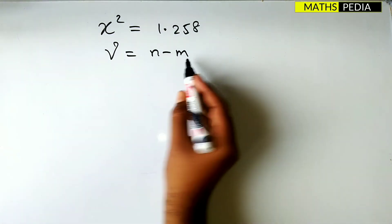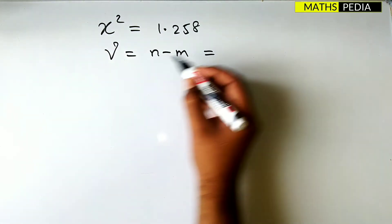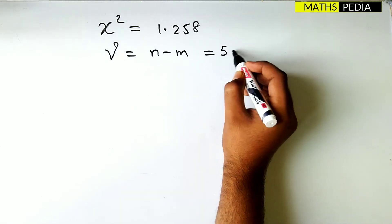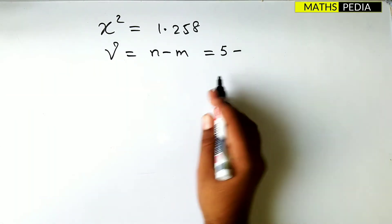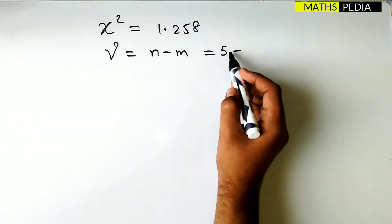And one more factor. So n minus m. What is n over here? It is nothing but 5 minus m frequency. Okay? Pairs of frequencies. 5 are there.